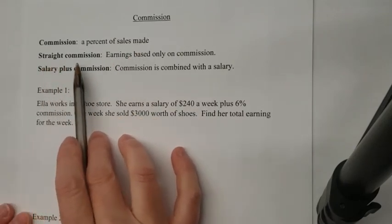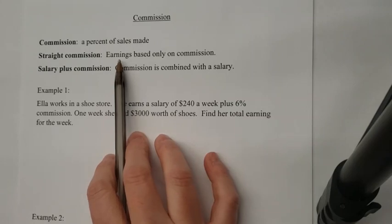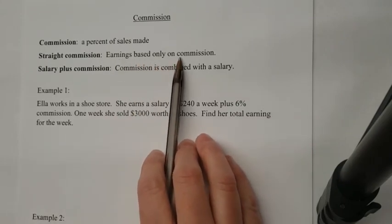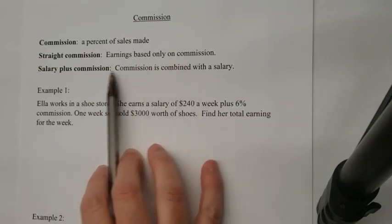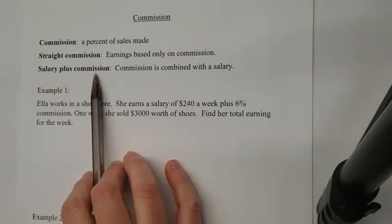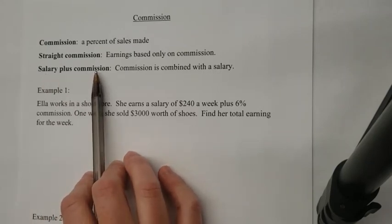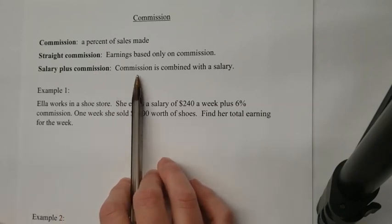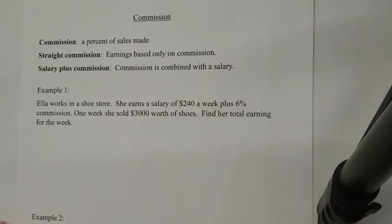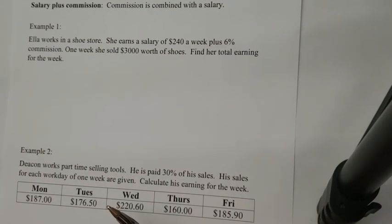Commission is a percent of the sales made, and there are two types of commission. You could get straight commission — that means you only get paid if you make sales, so earnings are based only on commission. Or you could get salary plus commission, so if you had a bad week where you didn't sell anything, you're still going to get some money. However, the more you sell, the more you're going to get paid — it's the commission combined with the salary.